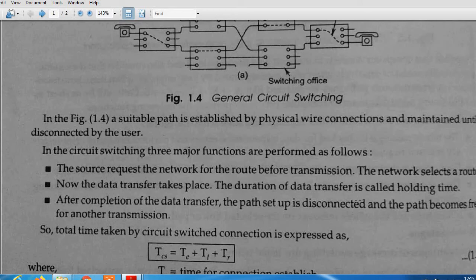Third, if data transfer is completed, then the path will be released. These are the three major parts. Definitely for all these, some specific time will be required. Now we will see the time taken by circuit switching and what parameters are used for finding it.